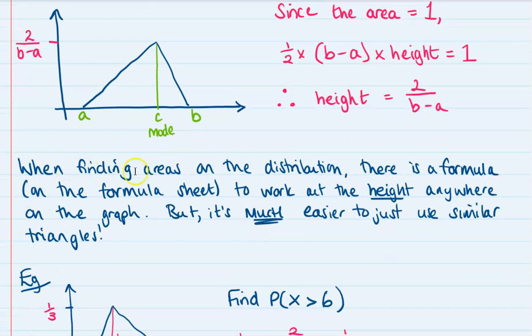When we want to find areas on this distribution, there is a formula on the formula sheet that I will take you through at the end of the video. But I'm not going to focus on using it because it's actually much easier just to use similar triangles. The formula on your formula sheet will help you work out the height anywhere on this triangle, but you can do the same thing with similar triangles, which I think is a lot easier as a process.